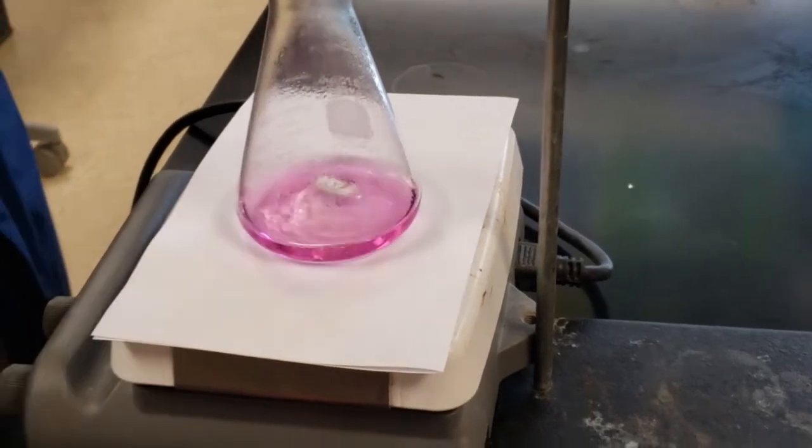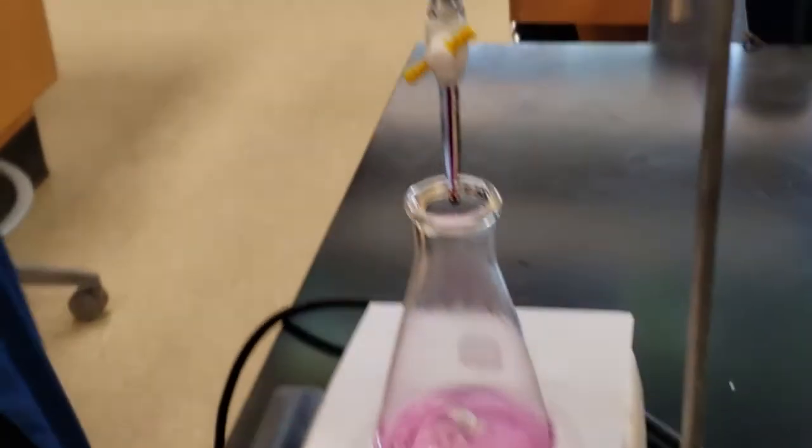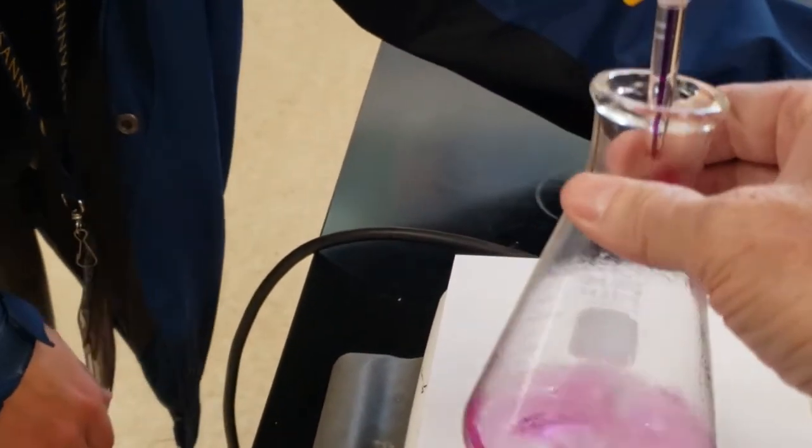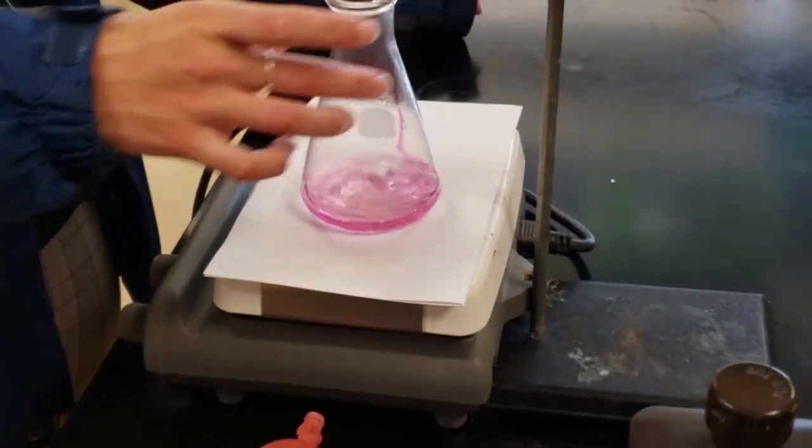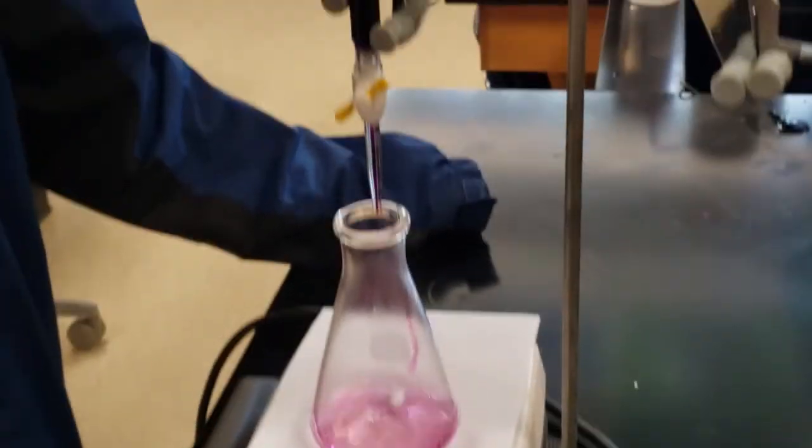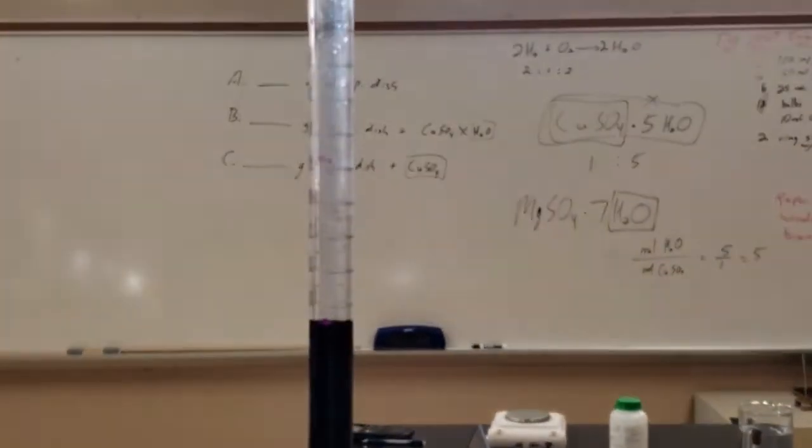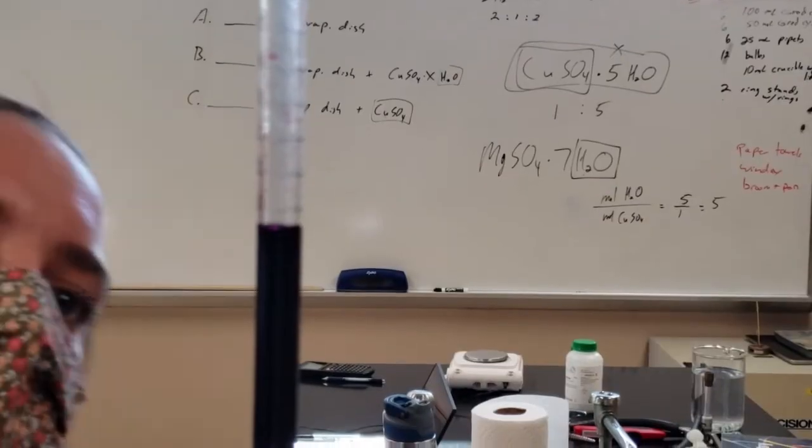Now there's one little drop still sitting there. It's already past the stopcock, so it's already been measured. We're going to go ahead and drop it in anyway. It won't make any difference. It's already been measured. Now that we're at the equivalence point, we're going to read the number and we're done.